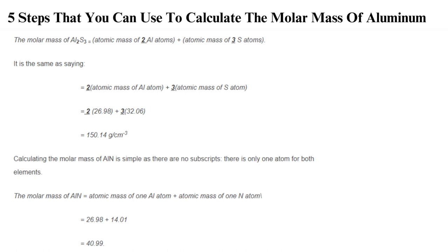Calculating the molar mass of aluminum nitride is simple as there are no subscripts. There is only one atom for both elements. The molar mass of aluminum nitride equals atomic mass of one aluminum atom plus atomic mass of one nitrogen atom equals 26.98 plus 14.01 equals 40.99. Keep in mind that you can get chemistry homework help from us. Simply reach out to get rapid, unmatched services.